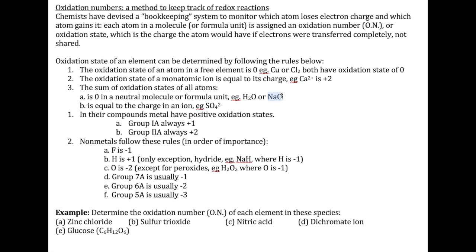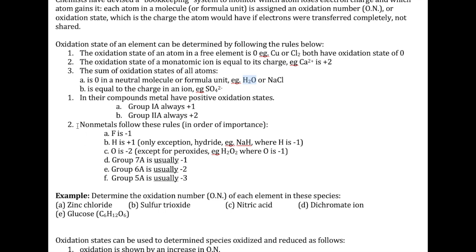Whenever you have a compound, you're going to have to start with something that you know first. For example, Na always has a positive one charge because it's group one — therefore Cl would automatically be negative one. For a covalent compound like water, or a compound with a bunch of nonmetals, you're going to have to follow the rules listed here. This is based on importance, so the top one is the most important — follow the next and the next.